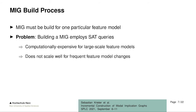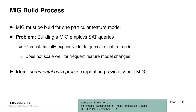It gets even worse: once you build a MIG for a feature model, you might want to change your feature model because you're developing your product line. If you change your feature model, you have to rebuild the Modal Implication Graph. So if you make frequent changes, you have to build a MIG again and again, employing this computationally expensive build process over and over. The idea in this paper is to come up with an incremental build process that only updates a MIG previously built on an older version.